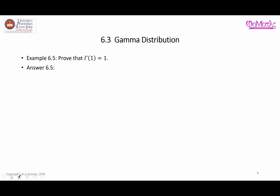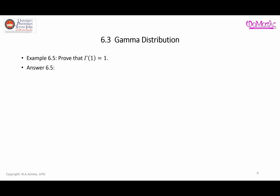Let's start with proving the first property: gamma of one is equal to one. Whenever you want to prove anything, we start with the definition itself. The gamma function is defined as the integral from zero to infinity of x to the power alpha minus one, times e to the negative x, dx.